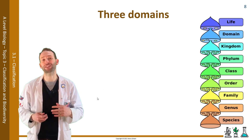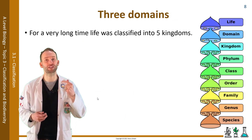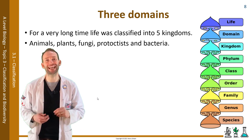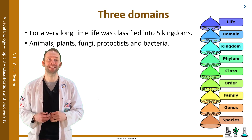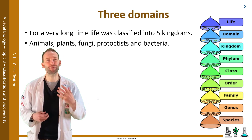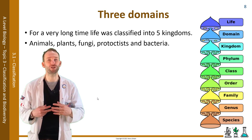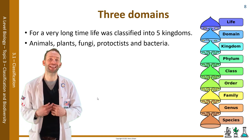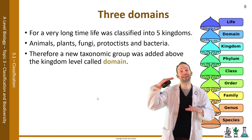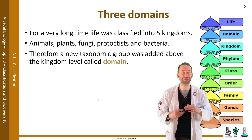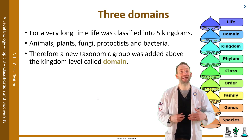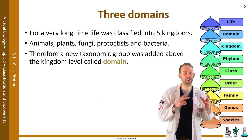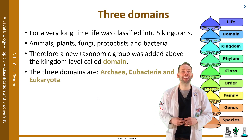For a very long time, life was classified into five kingdoms: animals, plants, fungi, protists, and bacteria. However, using technology such as DNA analysis, it was realised that there seemed to be two distinct groups of prokaryotes, and one of them, the archaeabacteria, probably gave rise to the other four eukaryotic kingdoms. Therefore, a new taxonomic group was added above the kingdom level called the domain, and the three-domain system of classification was introduced in 1977, with those three domains being archaea, eubacteria, and eukaryota.